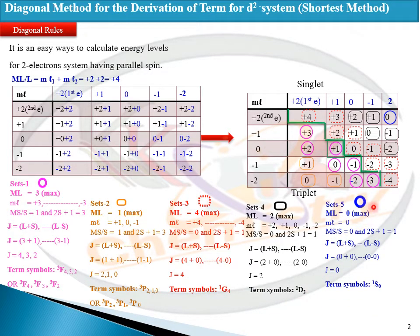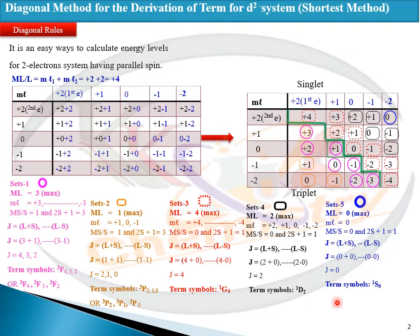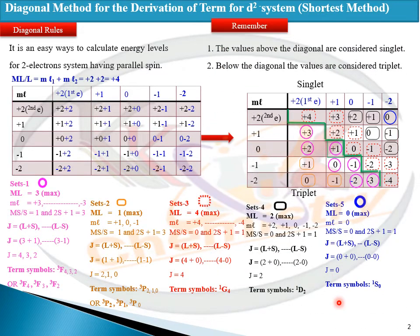The last one is set five, which also lies above the diagonal. ML is zero, MS is zero, and spin multiplicity is one (singlet). L is zero and S is zero, so J equals zero. The term symbol will be ¹S₀. Remember: values above the diagonal are considered singlet, while values below the diagonal are considered triplet.